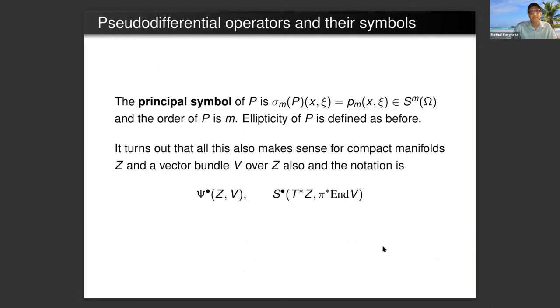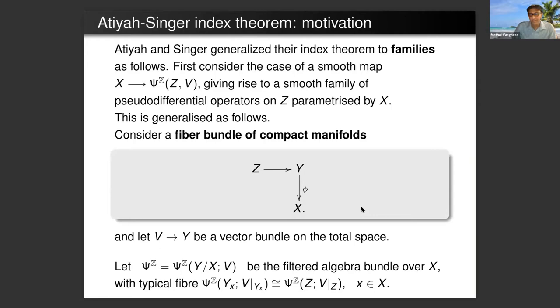It turns out although I've done this in Euclidean space, all this also makes sense for compact manifolds Z and a vector bundle V over Z, and the notation is pseudodifferential operators on Z with values in V, and this is the symbol. So the symbol is now sections of the endomorphism bundle of V over the cotangent bundle.